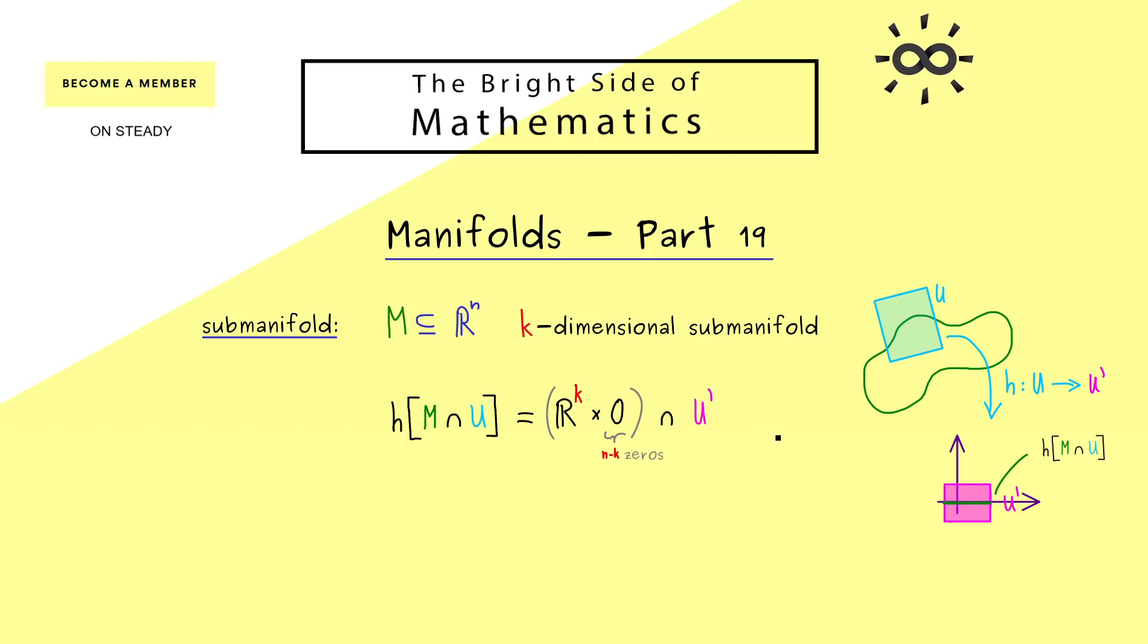Now please recall, making the manifold flat essentially just means that the image looks like R^k - all the other components are put to 0.